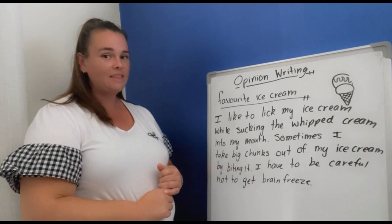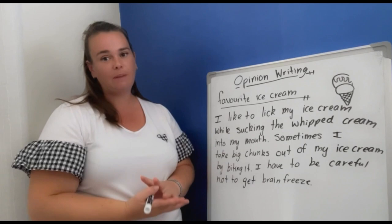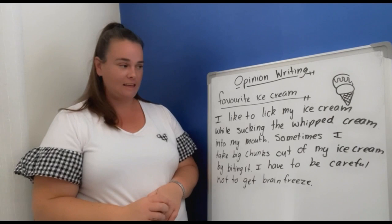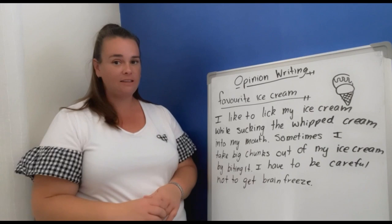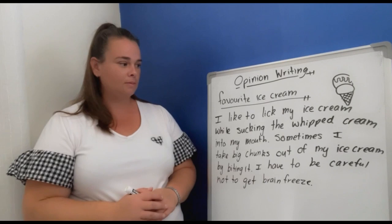So remember, this writing is based on your opinion — opinion writing — it's based on what you like. This is my writing, so this is based on what I like. We have written three paragraphs together. How many more sentences or paragraphs can you write telling us your opinion about your favourite ice cream? You might want to add in the favourite shop that serves your favourite ice cream, or maybe a favourite time of day or a special treat when you get to have your favourite ice cream.